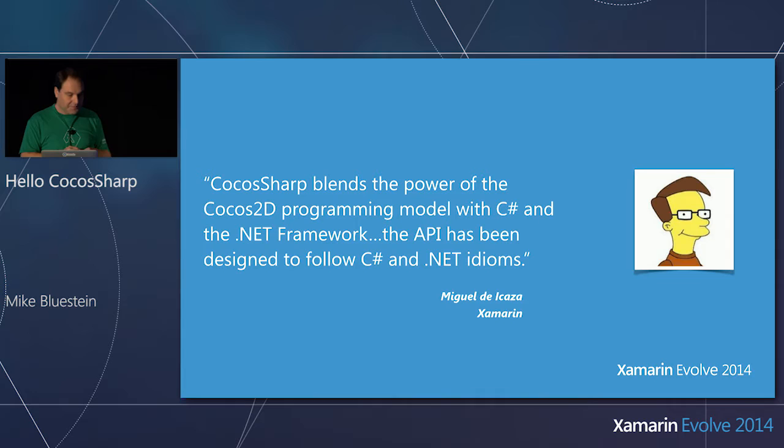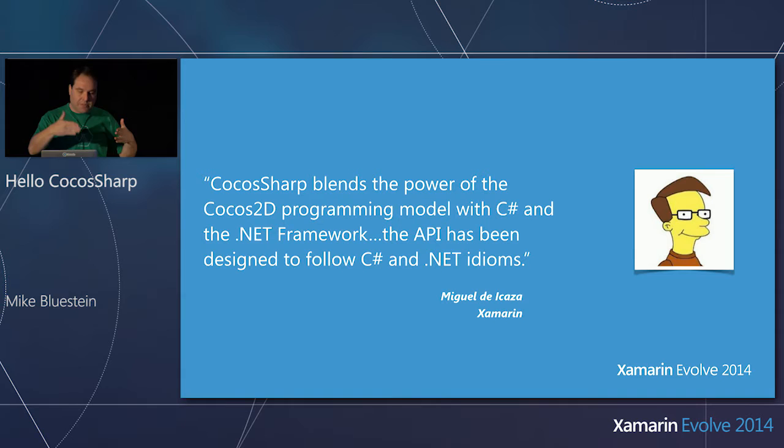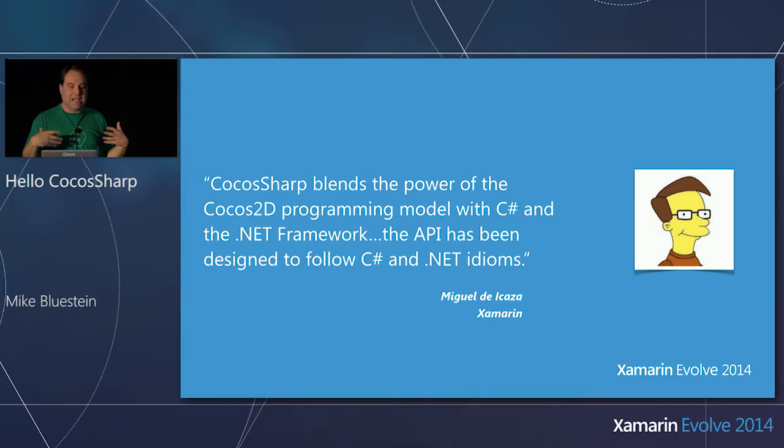Here's a quote from Miguel's blog post when he announced it: 'CocosSharp blends the power of the Cocos2D programming model with C# and the .NET framework.' And the last part is key — the API has been designed to follow C# and .NET idioms. So it's very idiomatic C#. It's based on the Cocos2D programming model, but it's not just a straight line-by-line port. It's designed for the .NET developer.